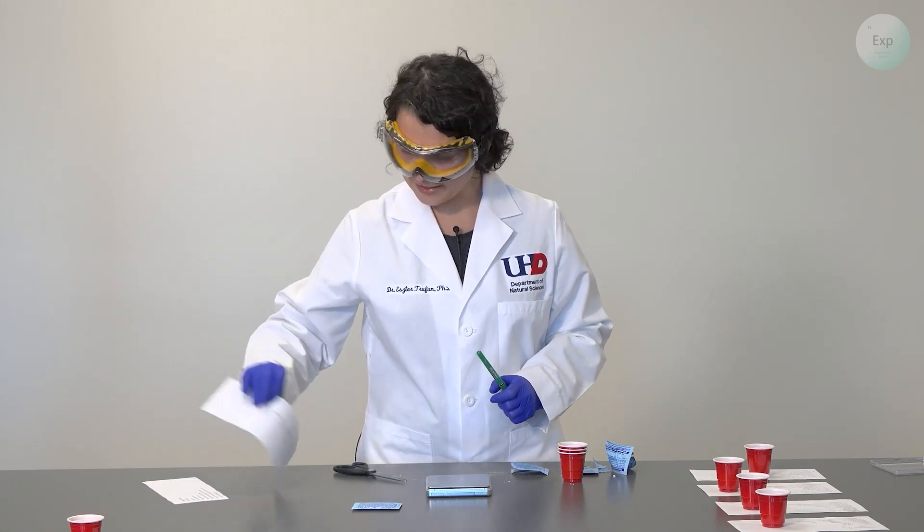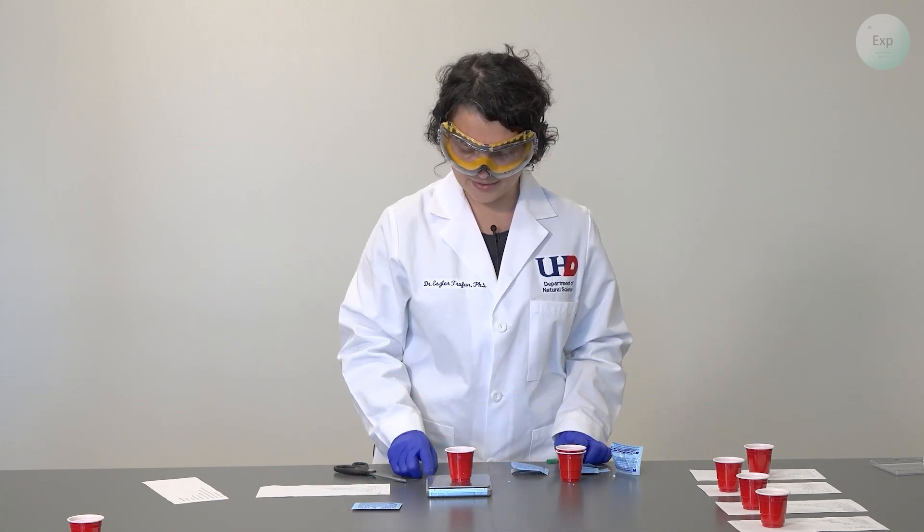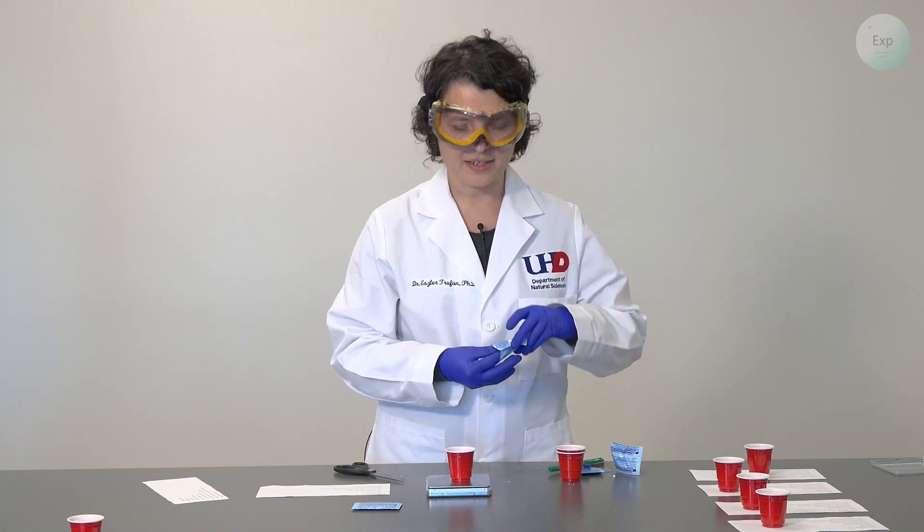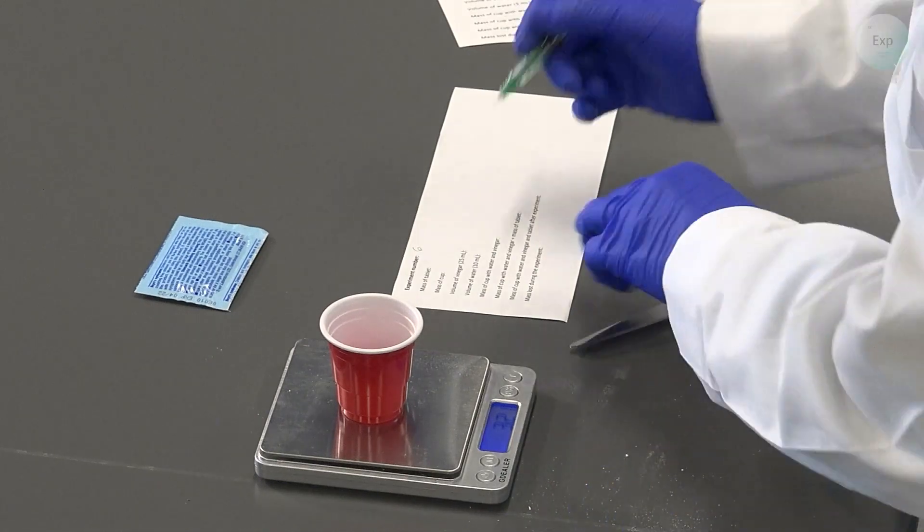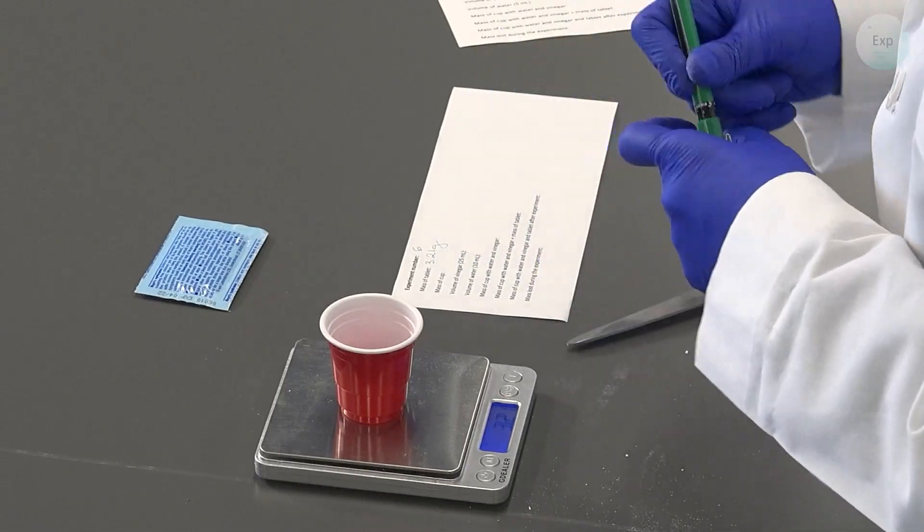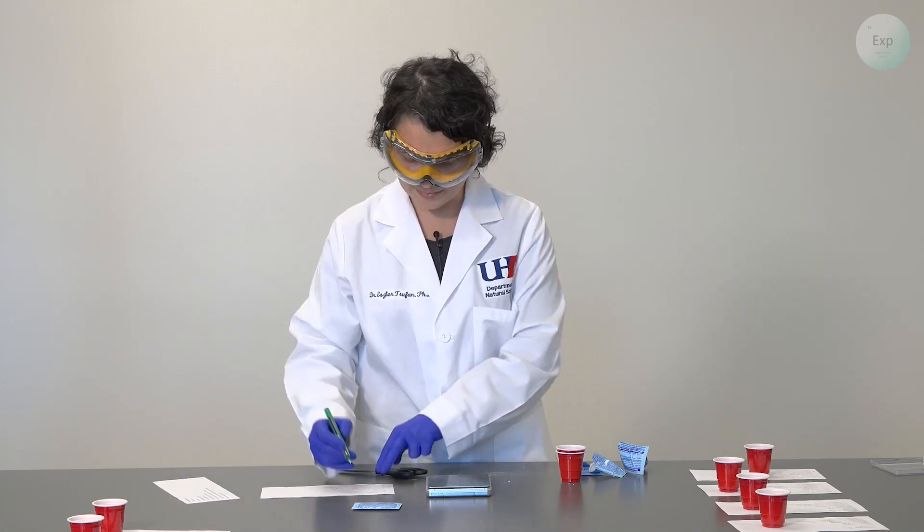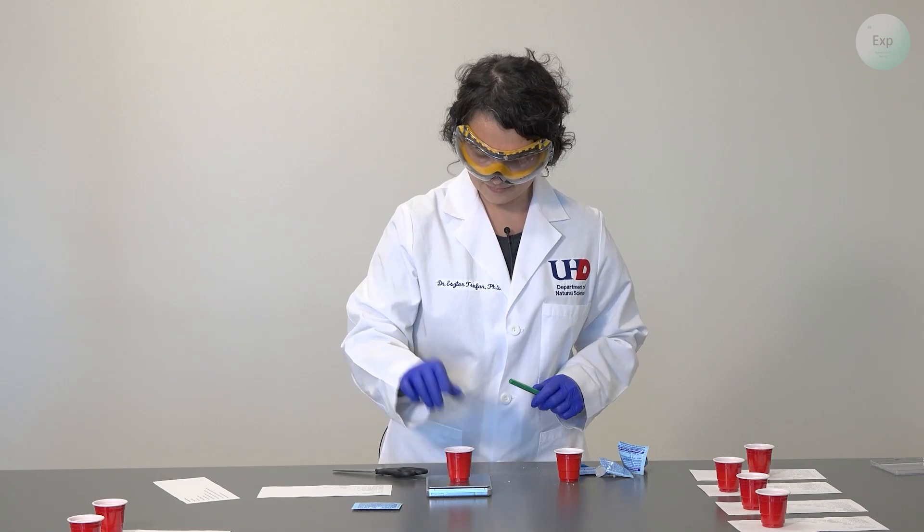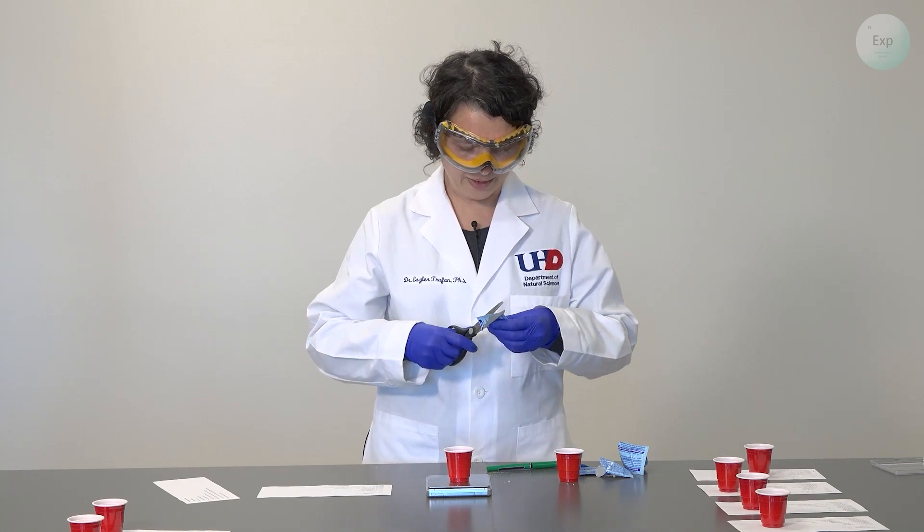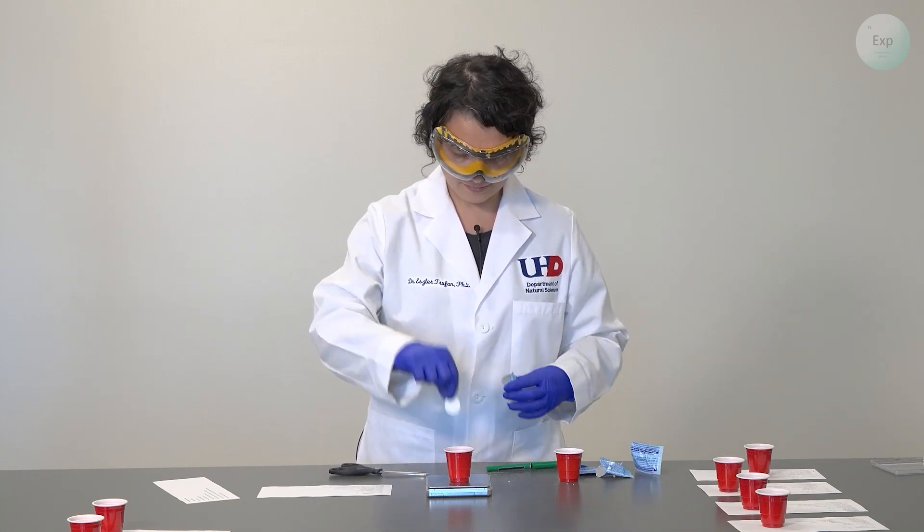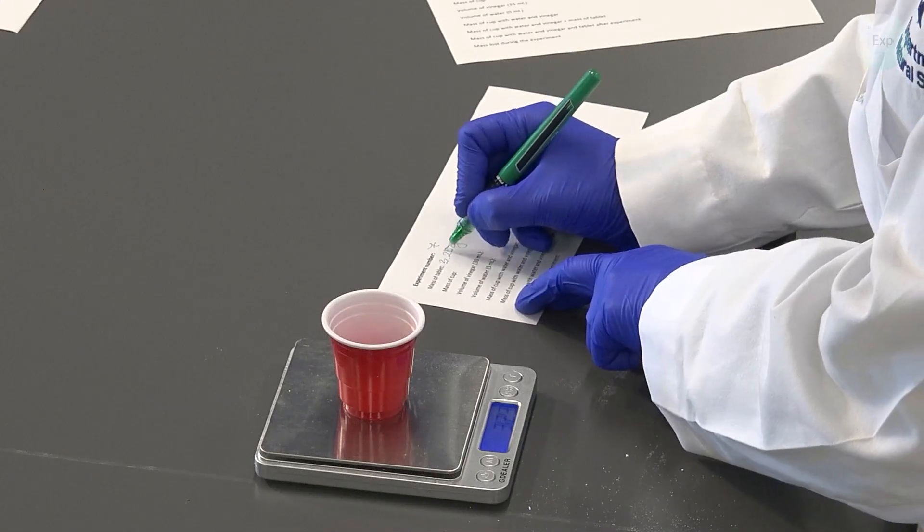For experiment six we place the cup on the scale, tare it and then extract the sixth tablet. Its mass is 3.21 grams. For experiment seven we open our final pouch and record the mass of our tablet which is 3.23 grams.